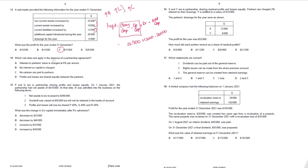Question 14. In the absence of a partnership agreement, which rule does NOT apply? Interest on partners' loans is charged at 6% — this does not apply; the correct rate is 5%. So option A is correct. The other rules do apply in the absence of an agreement: no interest on capital, no salaries paid, and profits and losses shared equally — all three are correct default rules.